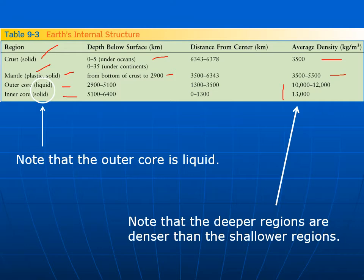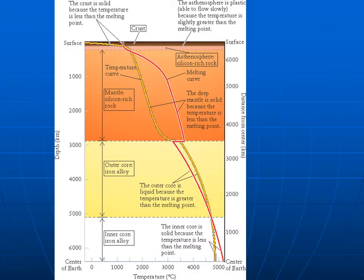That doesn't seem to make sense — you'd think the inner core would be hotter than the outer core. This graphic shows the temperature profile inside the Earth, from page 248 of the textbook. The yellow line gives you the temperature profile and the red line is the melting point. As you go inside the Earth, the temperature increases, and right at the bottom of the crust and top of the mantle, the temperature is very close to the melting point of rock. This is where a lot of volcanoes originate — from magma at that point.